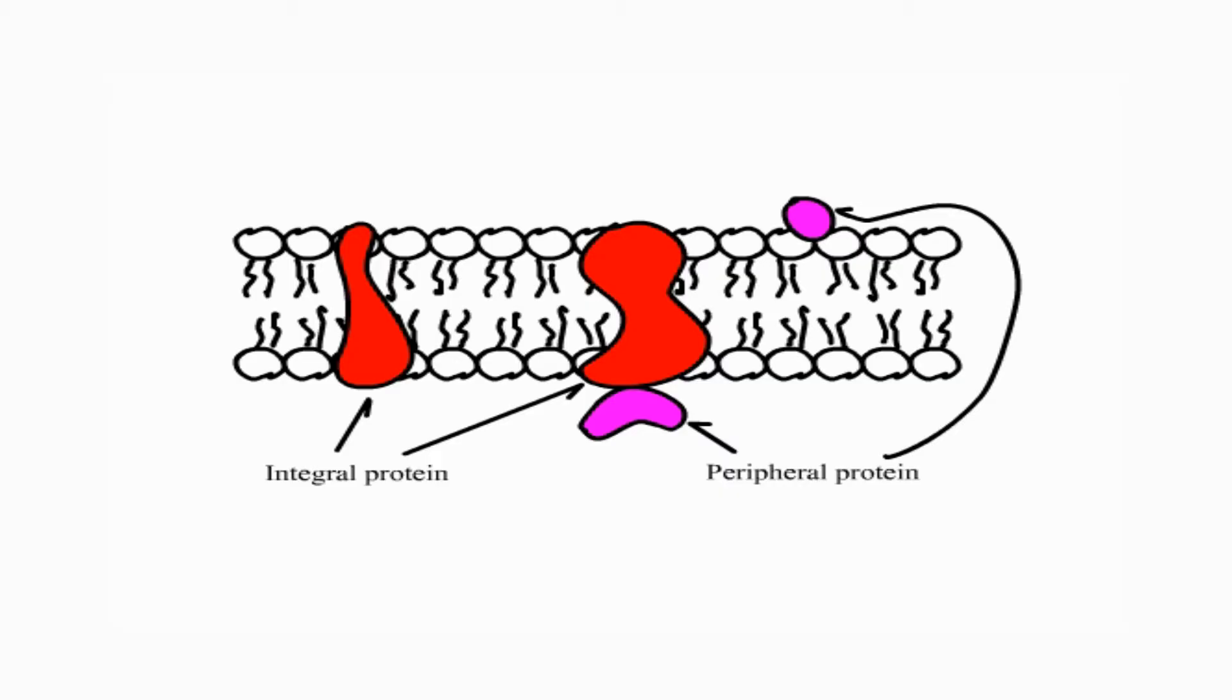Proteins are the second major component of plasma membranes. There are two main categories of membrane proteins: integral and peripheral. Integral proteins are embedded in the phospholipid bilayer and may or may not extend through both layers. Peripheral proteins are on the inner or outer surface of the phospholipid bilayer but not embedded in its hydrophobic core.